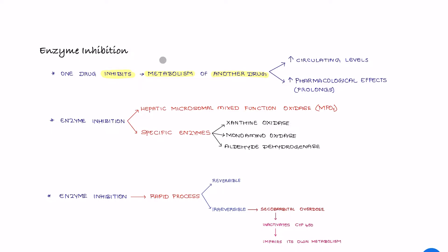Enzyme inhibition means one drug inhibits the enzyme activity which is required for the metabolism of another drug. So one drug inhibits the metabolism of another drug because of this enzyme inhibition.